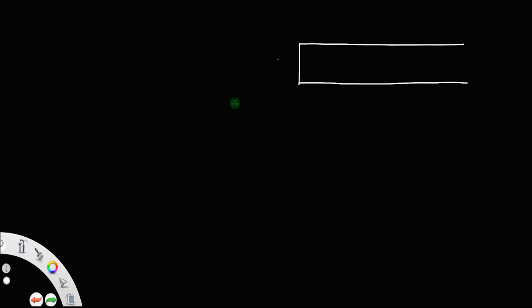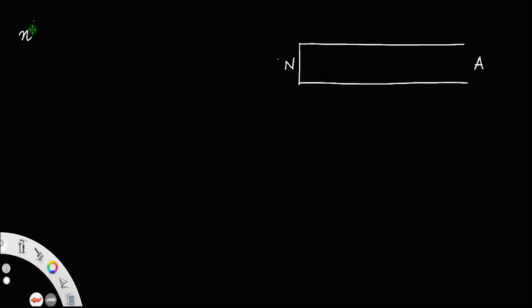For the molecules, there is restriction at the closed end because they cannot vibrate horizontally. So, always a node is formed at the closed end. Since molecules can vibrate at the open end horizontally, there is no restriction, which means no node is formed at the open end — antinodes are always formed at the open end. For the nth mode, the number of nodes formed between the ends is equal to n minus 1.